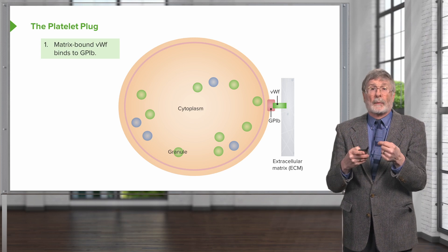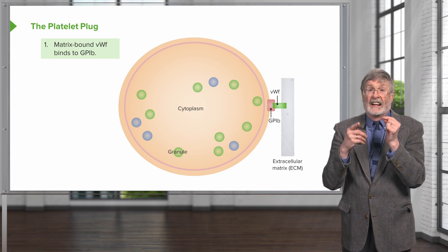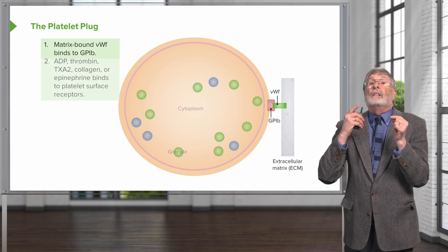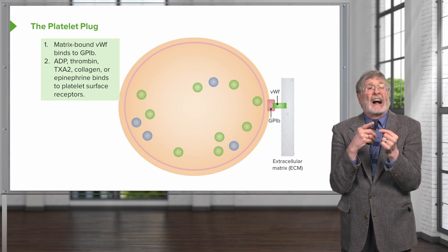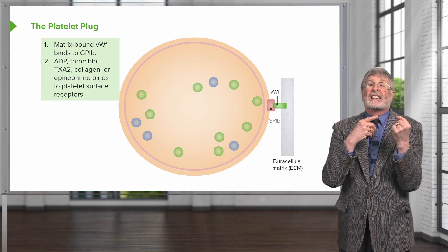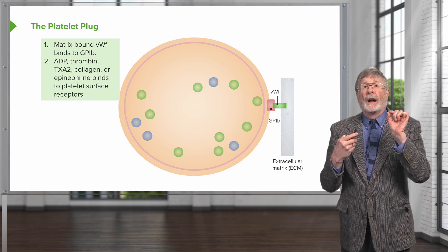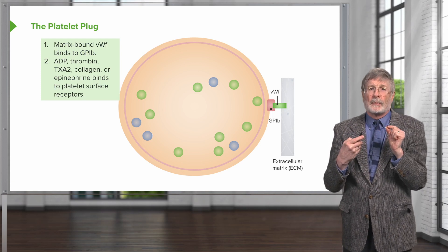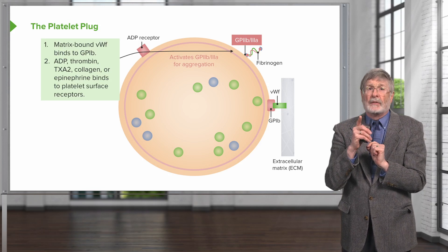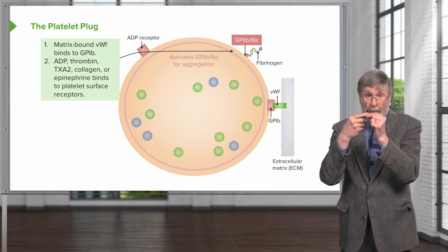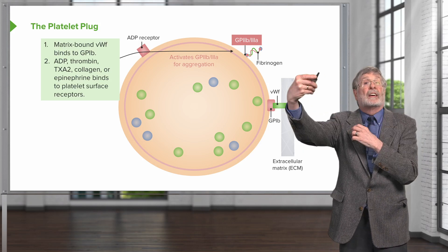Matrix-bound von Willebrand factor, shown on the right-hand side, binds to glycoprotein 1b — that's the initial step. Additionally, things released by platelets or activated endothelial cells — adenosine diphosphate, thrombin, thromboxane A2, collagen, or epinephrine — will bind to receptors on the surface of the platelets and drive the activation of glycoprotein 2b3a, allowing interaction with fibrinogen and making a secondary interaction with additional platelets.